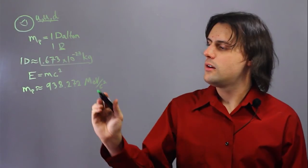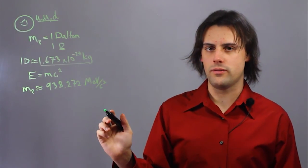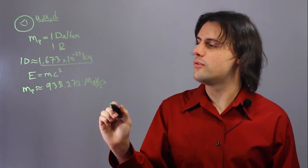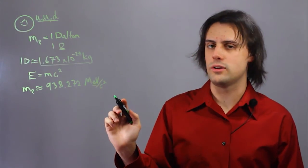An electron volt is a unit of energy and can be converted from the SI unit of joules.